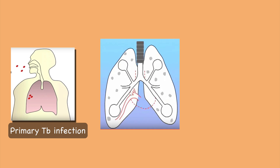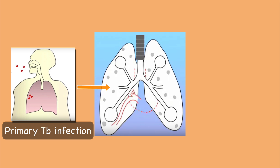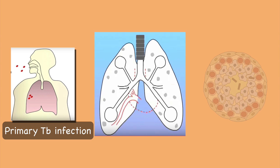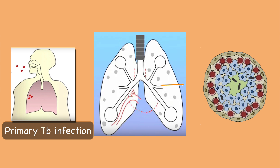These tubercle bacilli go to the subpleural space near the fissures between the middle and lower lobes of the lungs. They are ingested by alveolar macrophages. Within 2-3 weeks, the macrophages ingest and surround the tubercle bacilli. The cells form a barrier shell called a granuloma, also known as Ghon focus, that keeps the bacilli contained and under control, preventing further progression.